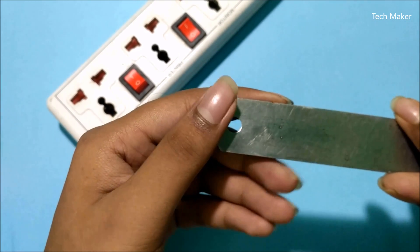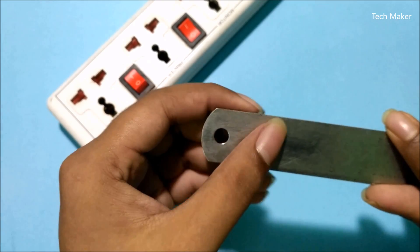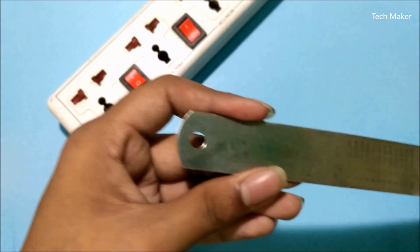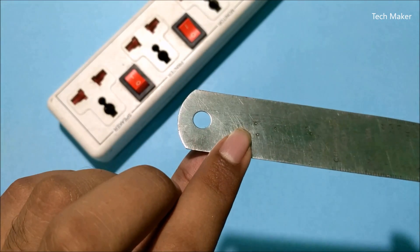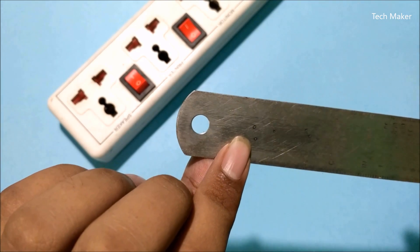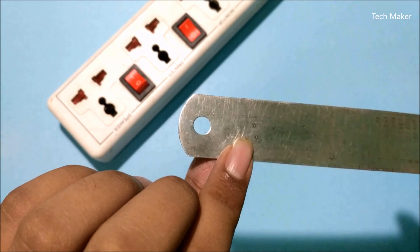In upcoming video we'll make a spot welding machine using this capacitor. You can see here it marks spots like a spot welding machine. Now we'll go with another experiment.